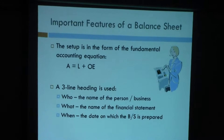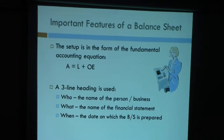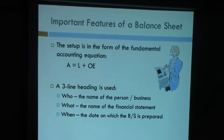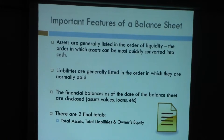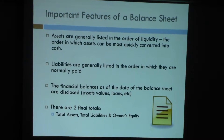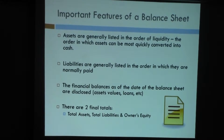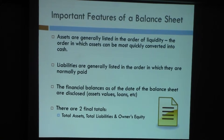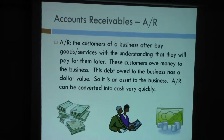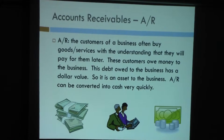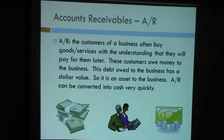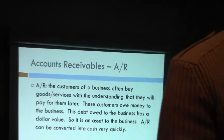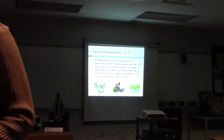Assets always equal liabilities plus equities — that's the most important accounting equation. This is a formal slide about how the balance sheet is set up. We've also talked about what an asset is and what a liability is. Assets are listed in order of liquidity. The most important assets include cash, which is the most liquid asset — cash and bank are used interchangeably.